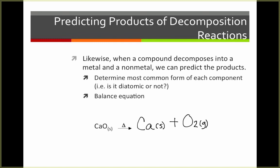Now we need to balance the equation. I have two oxygens on the right, so I need to put a two in front of my CaO to give me two oxygens on the left. Now I need to balance my calcium by putting a two in front of calcium. This equation is now complete and balanced.